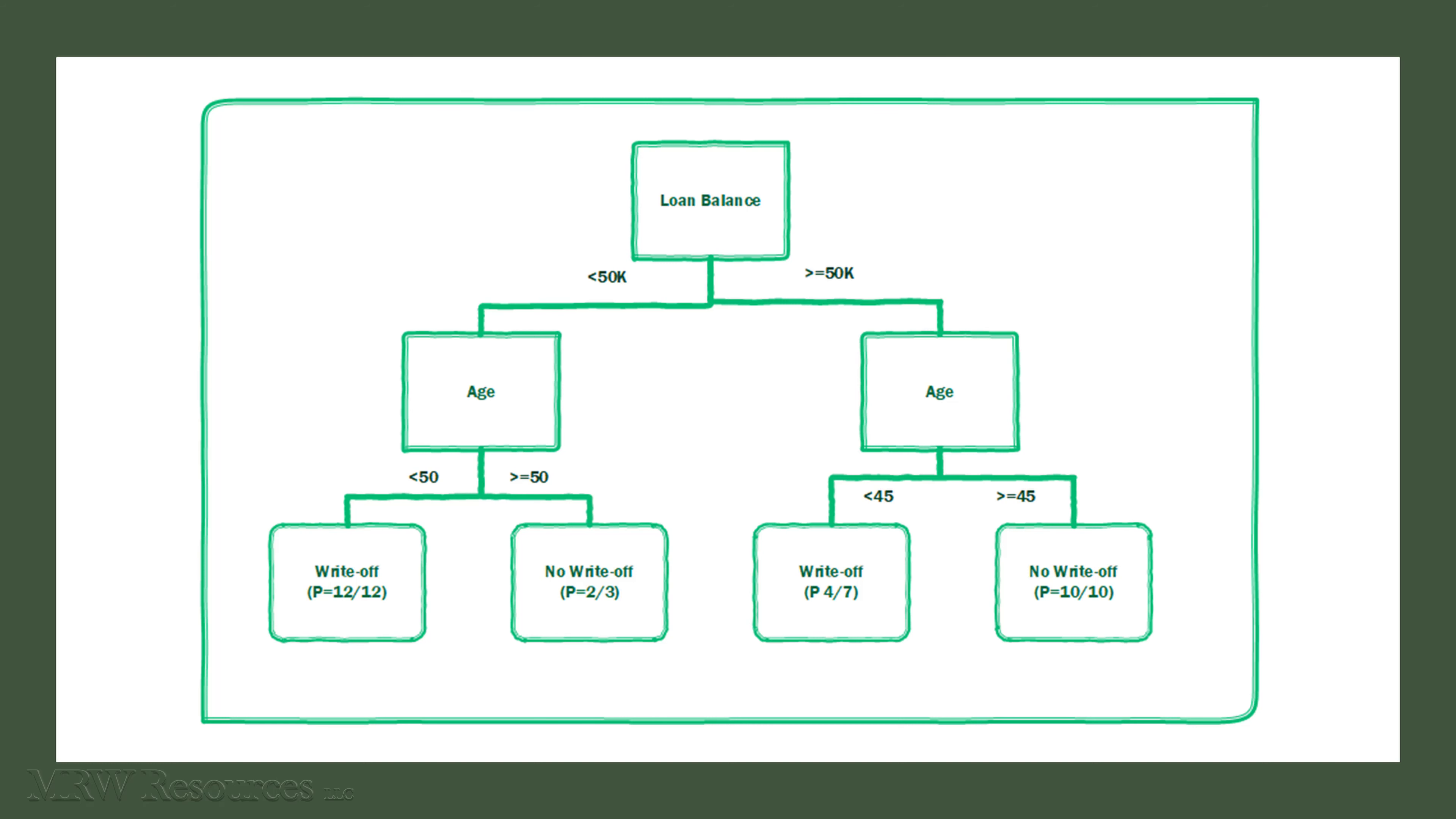So the branch in the lower left, we've got all 12. So we've got a pure subgroup there - all 12 have a probability of write-off, whereas two out of three in the next decision node, 67%, have a probability of no write-off.